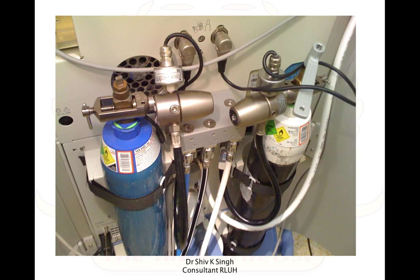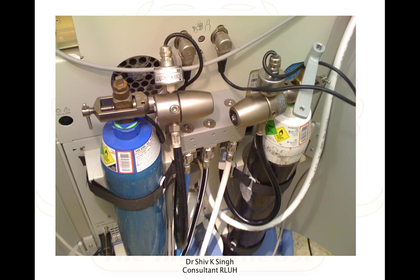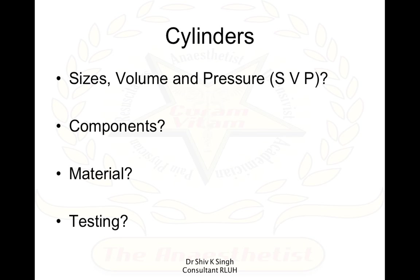From the machine we come to the pressure regulators and cylinders. Cylinders are seen at the back of the machine and are the secondary supply system, but they become the primary supply system if you don't have the pipeline. For cylinders, you need to know the size, volume, and pressures, as well as the components, what they are made of, and how they are tested.